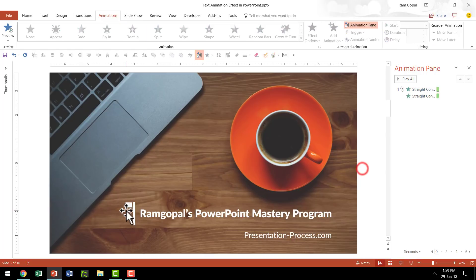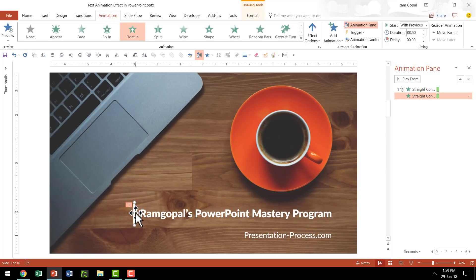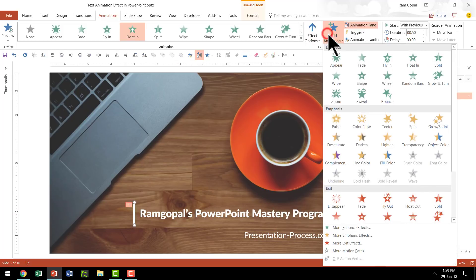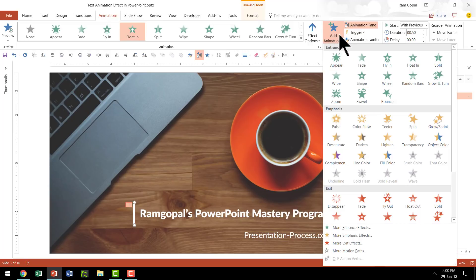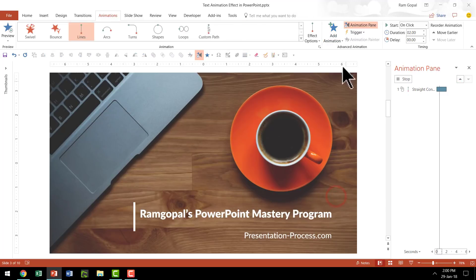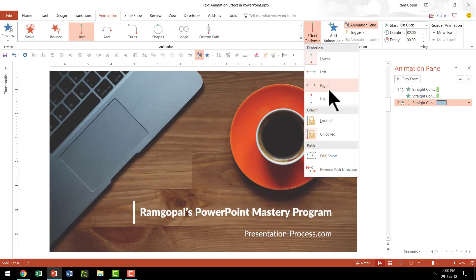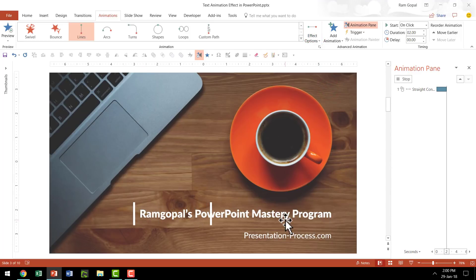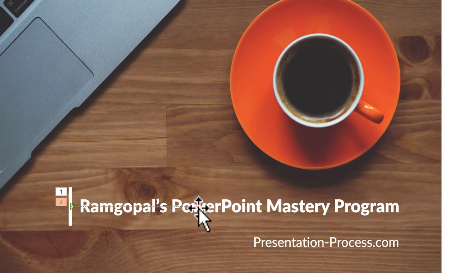Once this is done, the top line needs to move from here all the way to here. We are going to add an animation — remember, we already have one on this, so we need to use the add animation option. If you use the regular animations option, the earlier animation gets replaced, so be careful. Go to add animation, then under motion paths select lines. Go to effect options and choose right, so the direction of movement is to the right. You can see the red arrow which represents the end point.